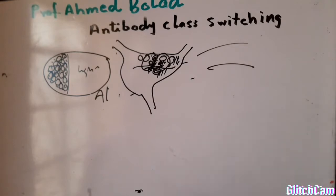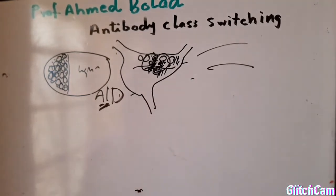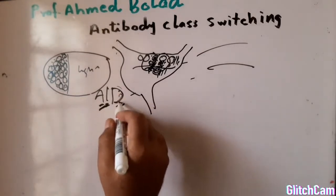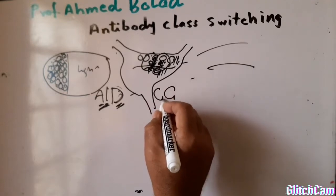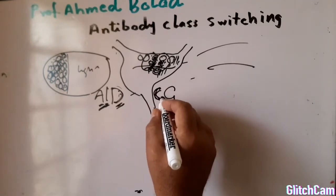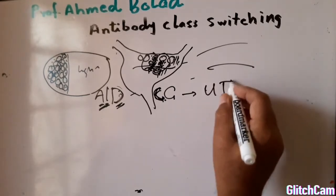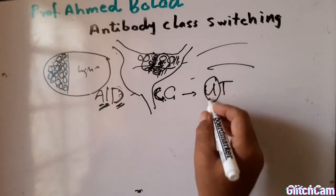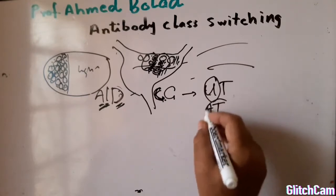This AID, or activation-induced cytidine deaminase enzyme, will change the C-G base pair to U-T base pair, and this U will be recognized as A-T. This is very important for class switch.